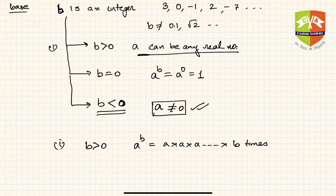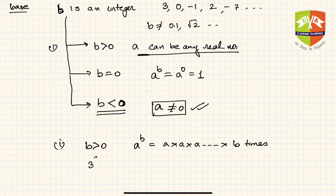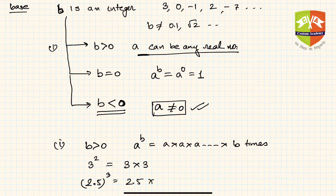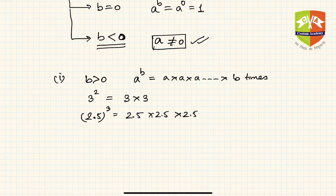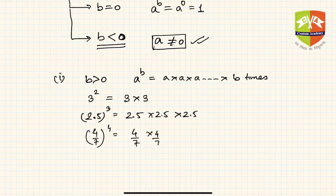For example: 3^2 = 3 × 3; 2.5^3 = 2.5 × 2.5 × 2.5; and (4/7)^4 = (4/7) × (4/7) × (4/7) × (4/7).